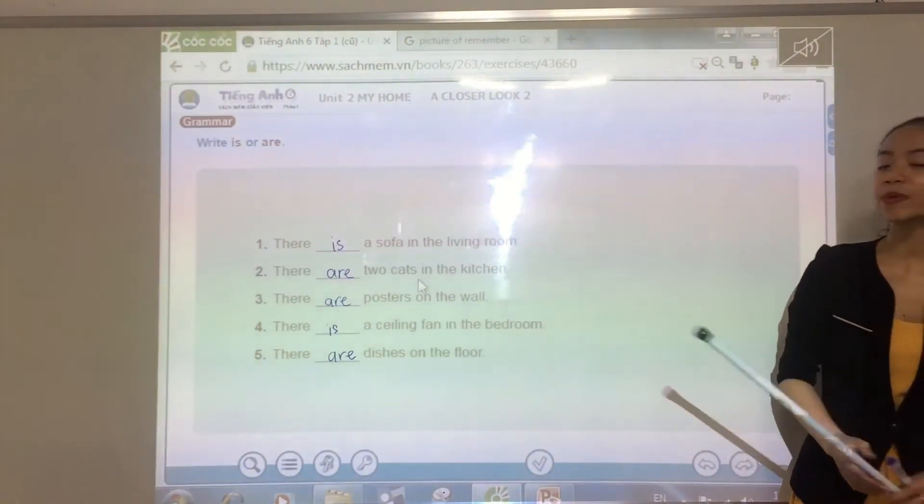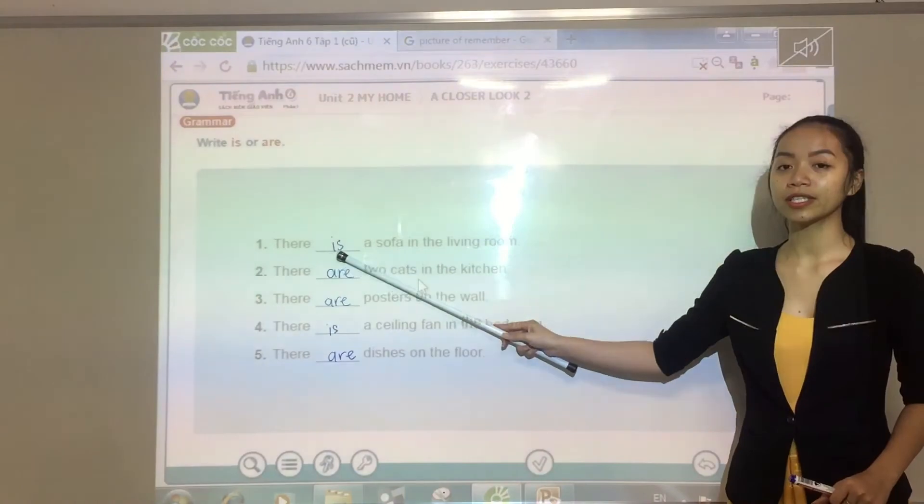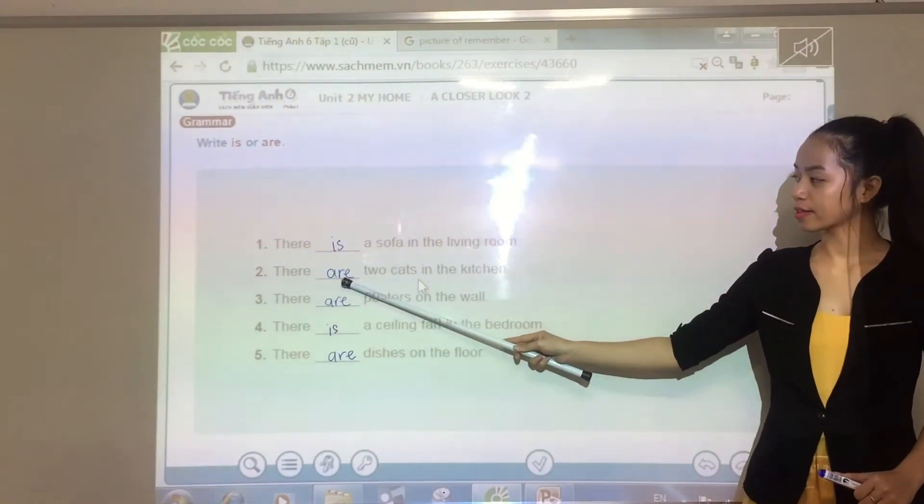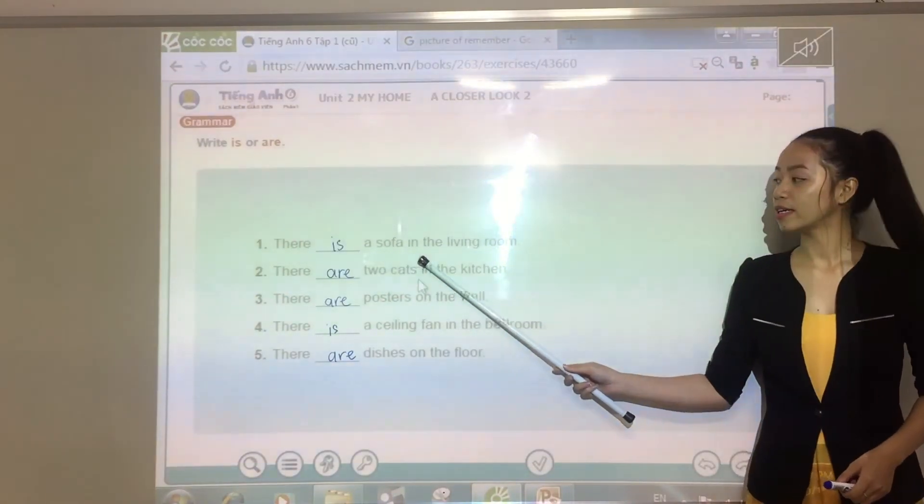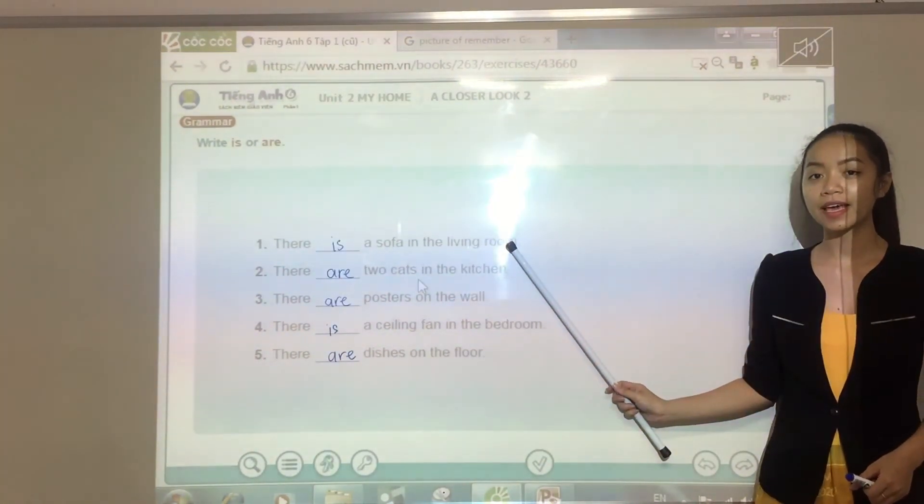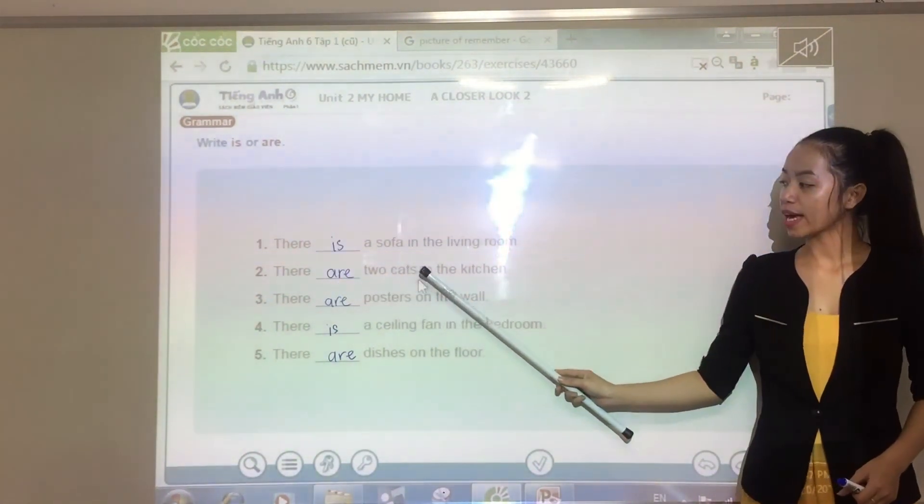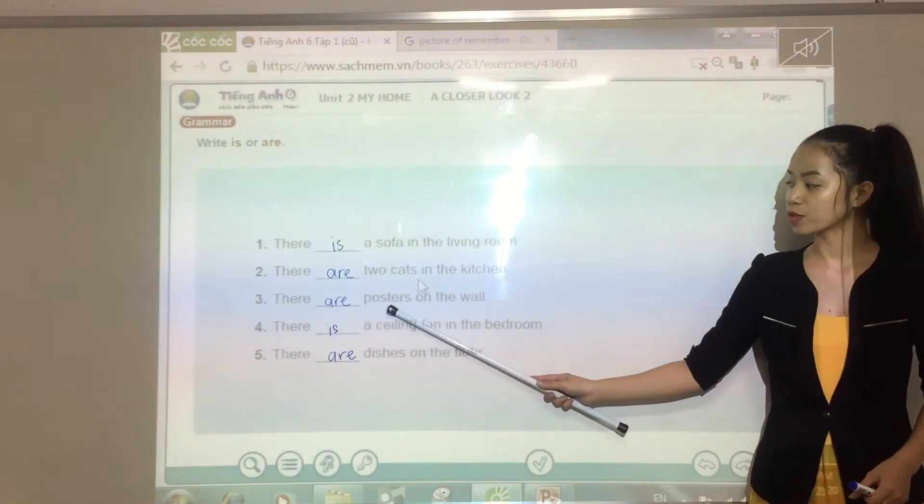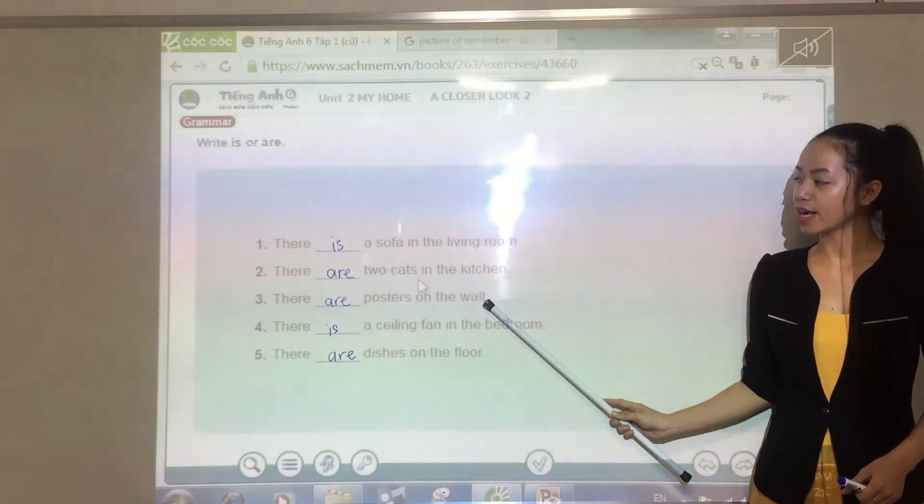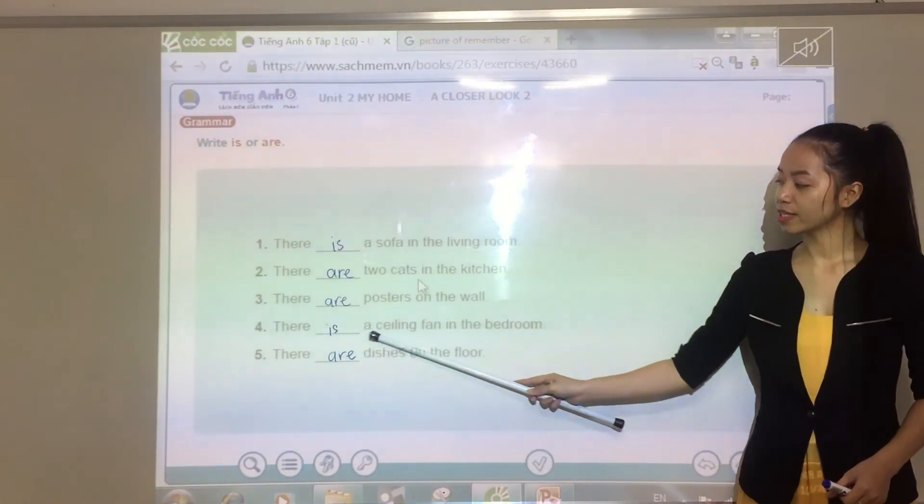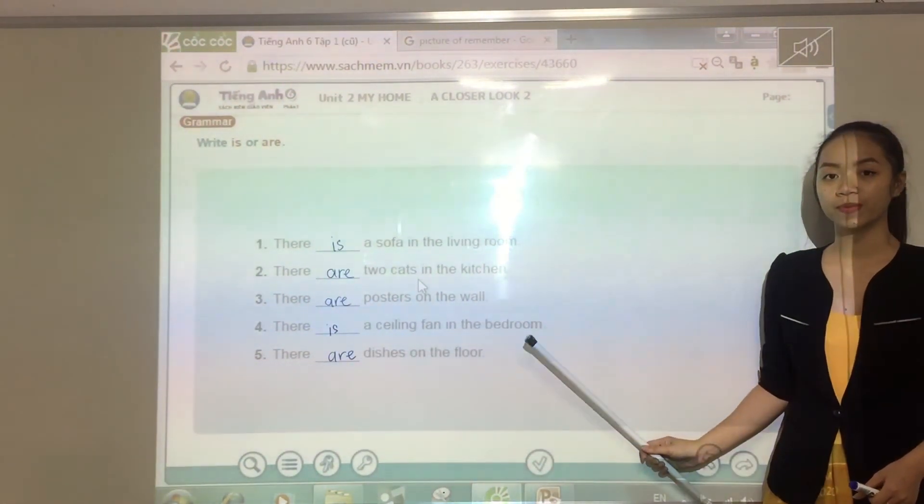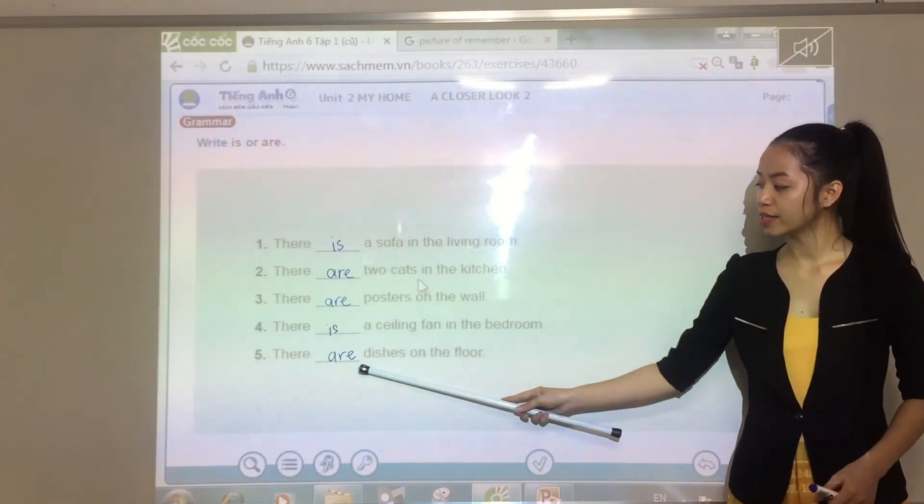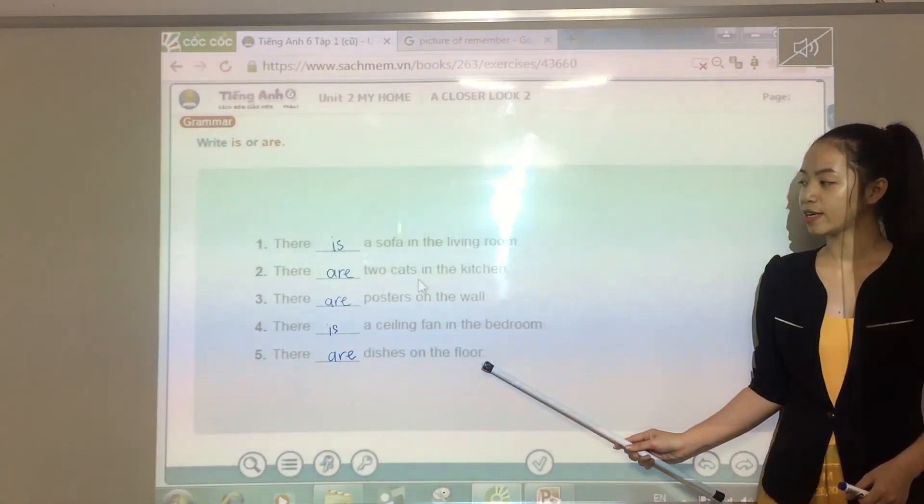So please look at the board and repeat after me. There is a sofa in the living room. Again. There are two cats in the kitchen. Again. There are posters on the wall. Again. There is a ceiling fan in the bedroom. Again. There are dishes on the floor. Again.